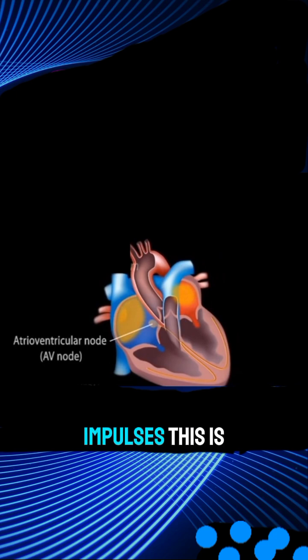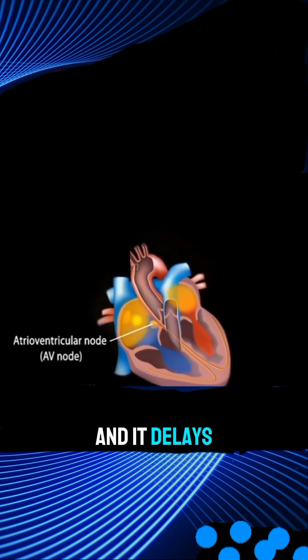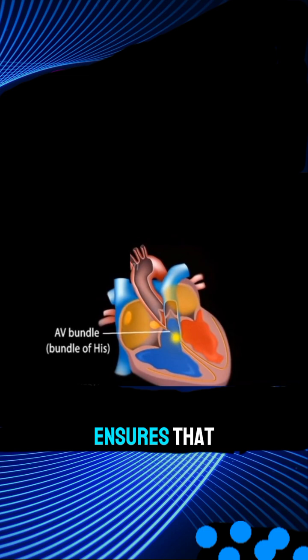This is the only pathway from the atria to the ventricles, and it delays the electrical impulse from reaching the ventricles. This delay ensures that the atria have ejected all of their blood into the ventricles before contracting.